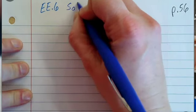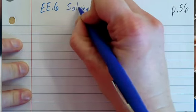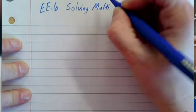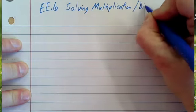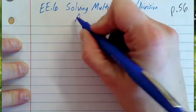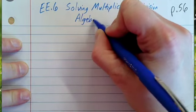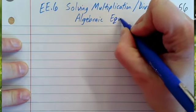This is page 56 in our notes. Today my colors are blue and black. The standard we are continuing to work on is EE6: Solving Multiplication and Division Algebraic Equations.